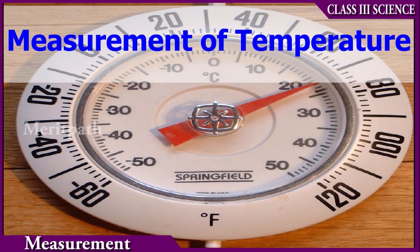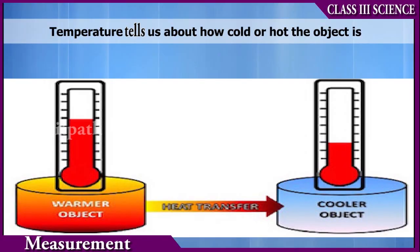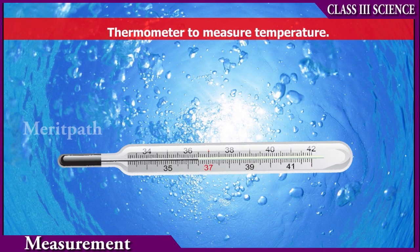Measurement of temperature: temperature tells us about how cold or hot an object is. A thermometer is used to measure temperature.